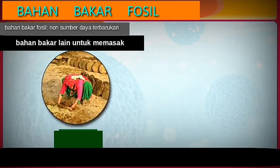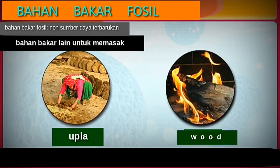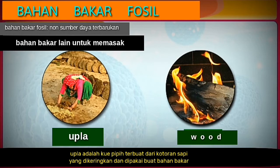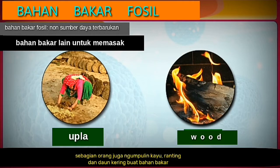In many places, specially villages, wood, coal, and upla are used as cooking fuels. Upla are flattened cakes made from cow dung — they are dried and then used as a fuel. Some people also collect wood, twigs, and dried leaves and use them as fuel.